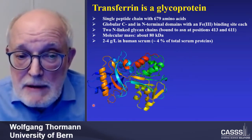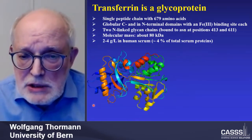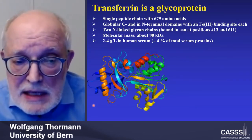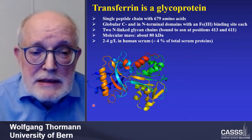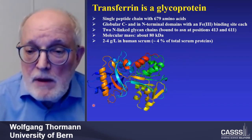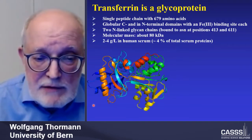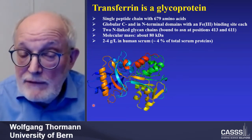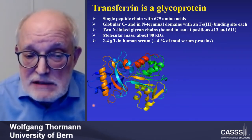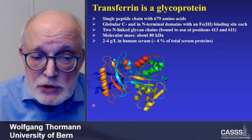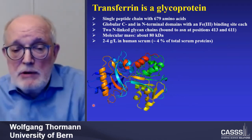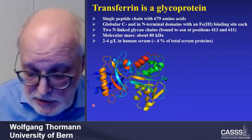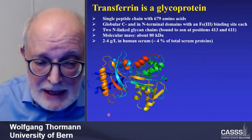Transferrin is a glycoprotein. It has a single peptide chain with 679 amino acids, two iron binding sites, and two linked glycan chains bound at positions 413 and 611. The molecular mass is about 80 kilodalton, and we have quite a bit of transferrin in serum — 2 to 4 grams per liter — which amounts to about 4% of the total serum proteins. The structure of the molecule is quite complex.